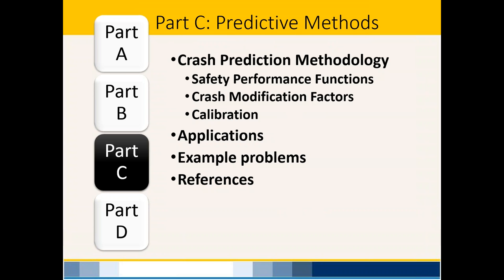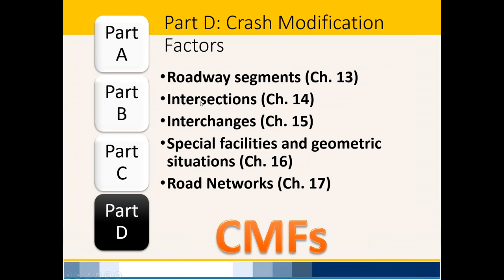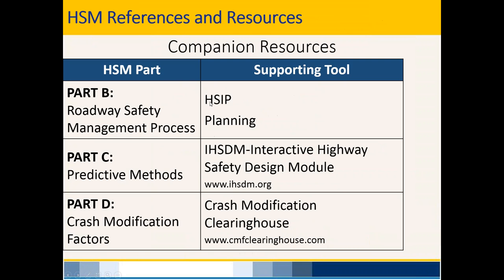Parts C and D are most pertinent to design and planning functions. Part C covers safety performance functions and crash modification factors used to predict crashes along different roadway types. Part D gives you the ability to apply crash modification factors for different scenarios — intersections, interchanges, roadway segments, or roadway networks. There are also applications and example problems within these sections.